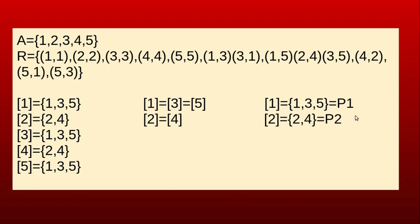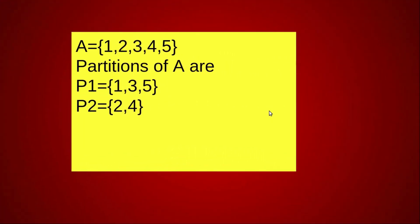We denote these two equivalence classes by P1 and P2, where P1 = {1, 3, 5} and P2 = {2, 4}. These two sets satisfy: P1 union P2 = {1, 2, 3, 4, 5} = A, and P1 intersection P2 = null set. Elements within each class are related to each other, but no element of P1 is related to any element of P2. Therefore P1 and P2 form a partition of A.